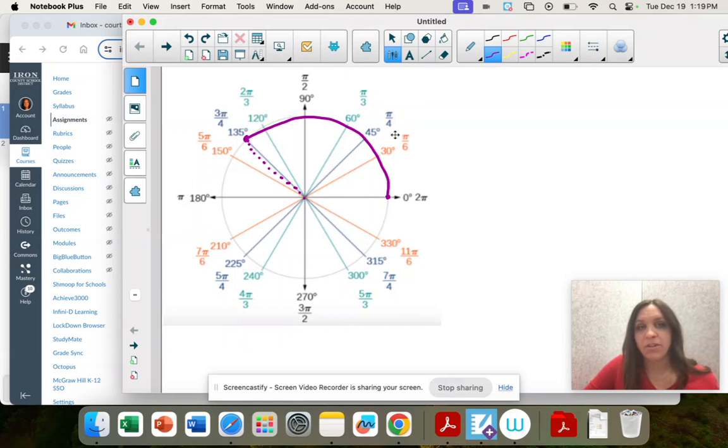Pi over four is 45 degrees. So when you cut that, it's right in the middle.